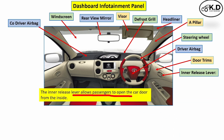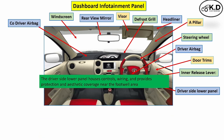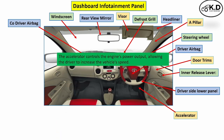The next part is the driver side lower panel. Its function is to house the fuse and other controls, wire and electrical controls, and also provide aesthetic appearance and protection to the front area. The next part is the accelerator, whose function is to control the output from the engine to adjust the speed of the vehicle.